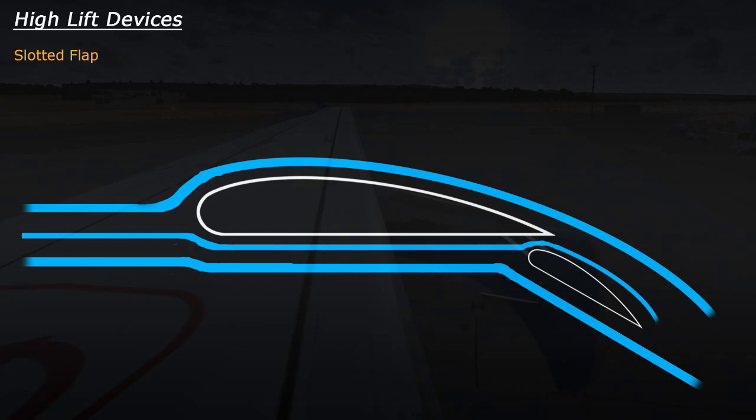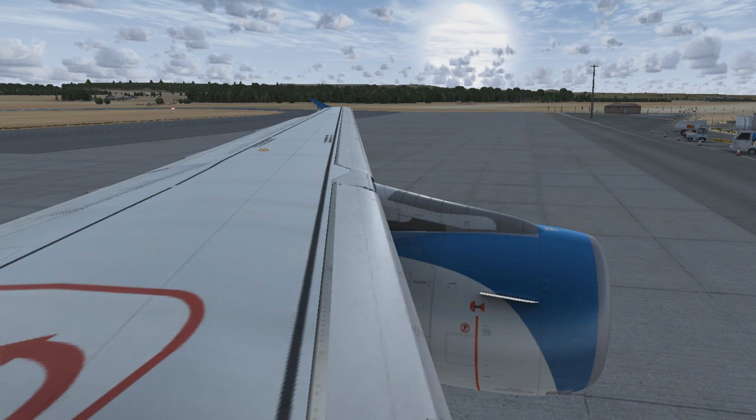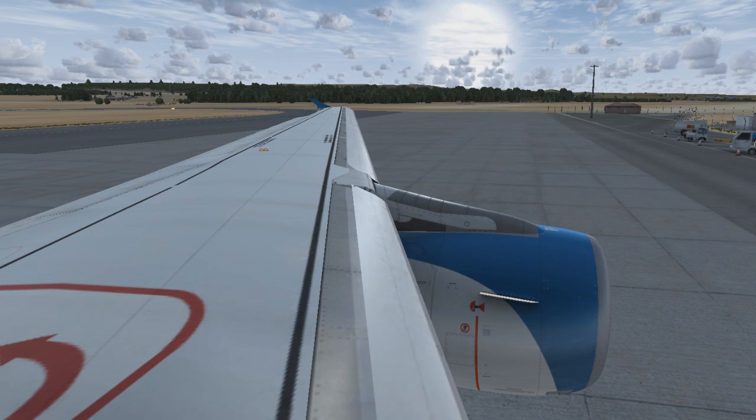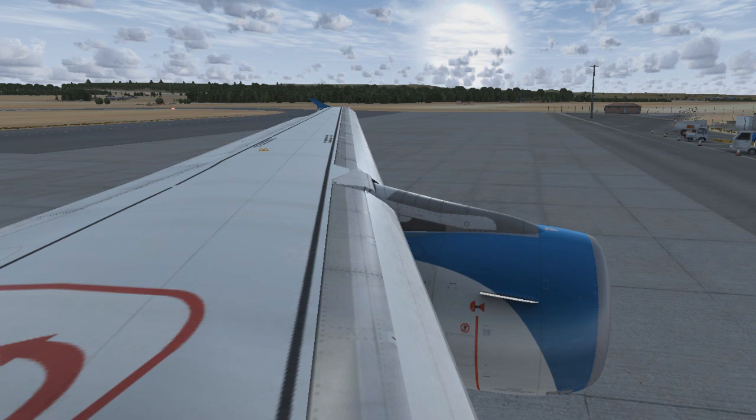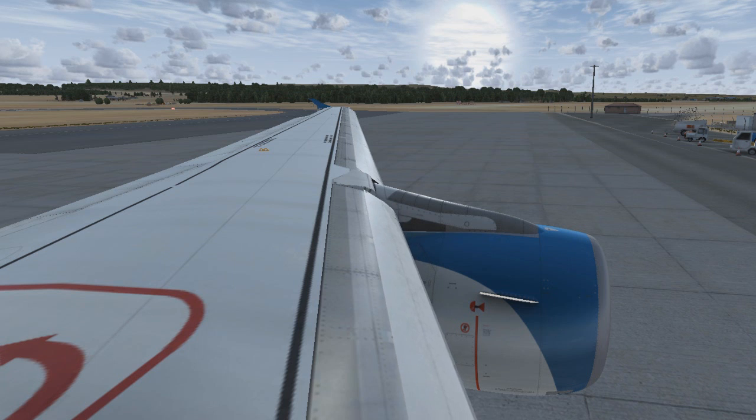Now, another device which is most commonly found on commercial jets is the leading edge slat. This device sits over the leading edge or the front of the wing and can extend forward to increase the surface area of a wing, again causing the wing to produce more lift at slower speeds. These can also have a slot where air passes underneath the leading edge slat and then flow over the main wing. As with flaps, these can be retracted to reduce the amount of drag or wind resistance, allowing a plane to fly faster.